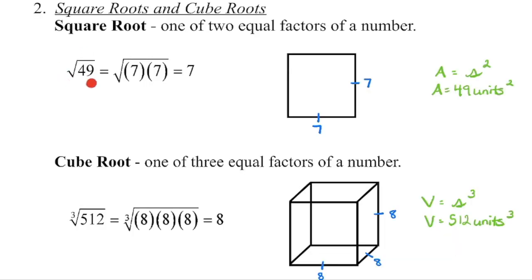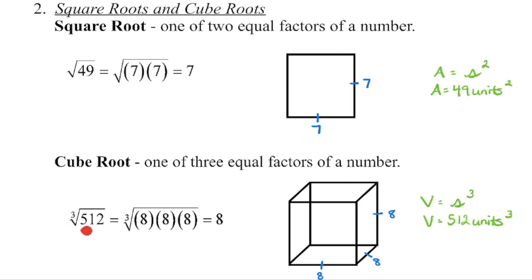The square root of a number is a number that when we multiply that number by itself, we get that original value. The cube root of a number is a number that when we take that number and multiply it by itself three times, we get that original value back.